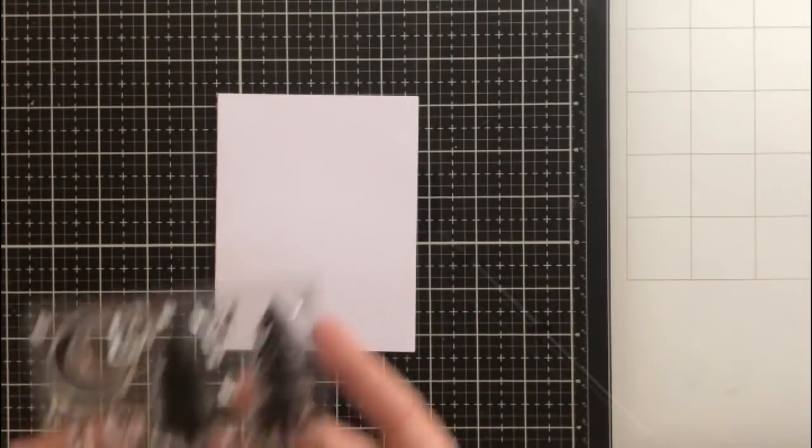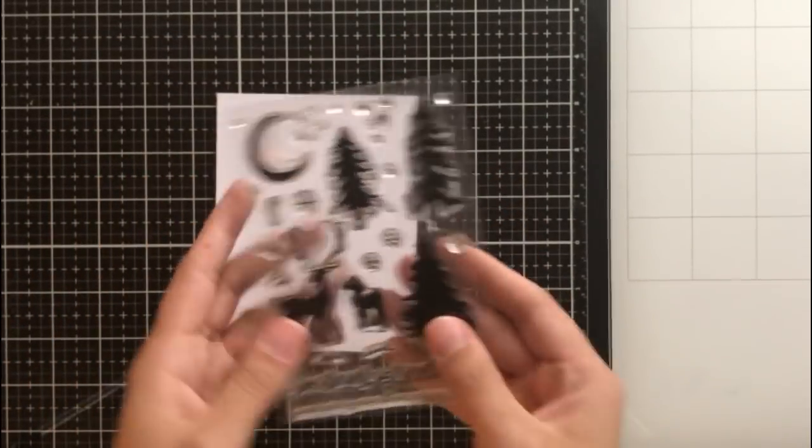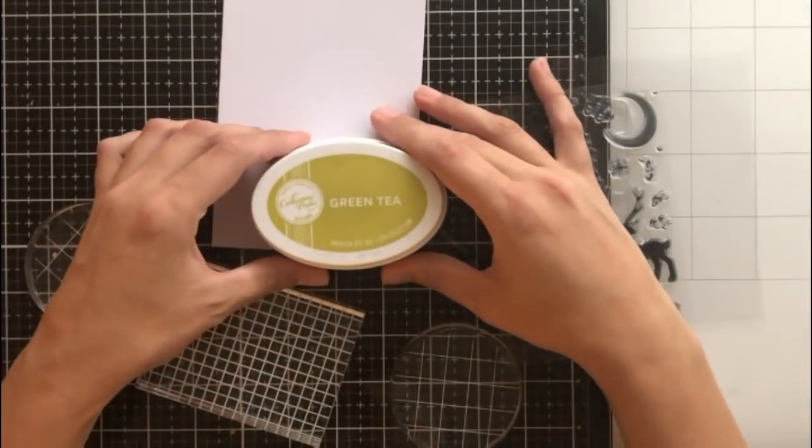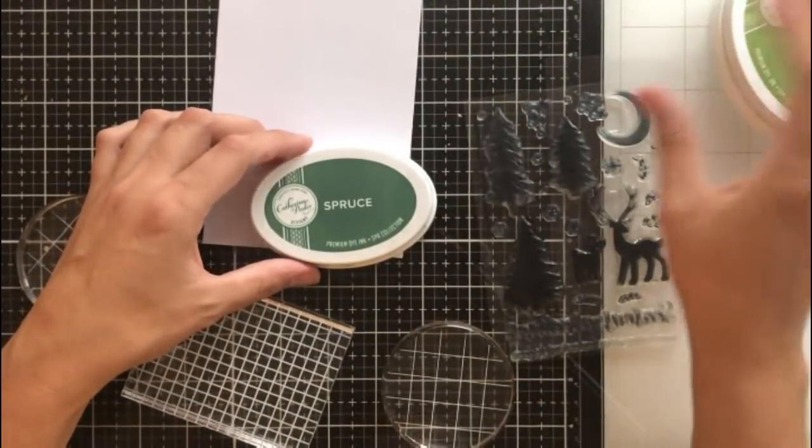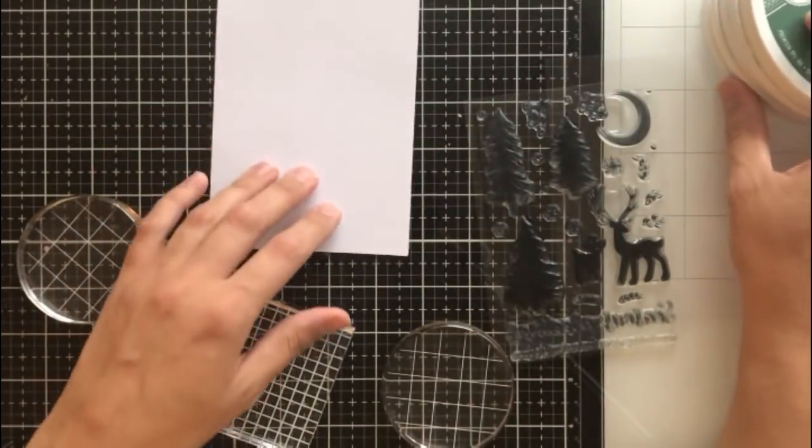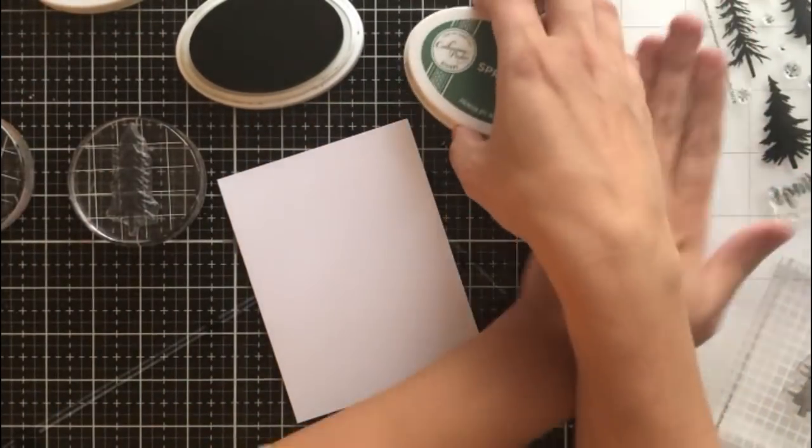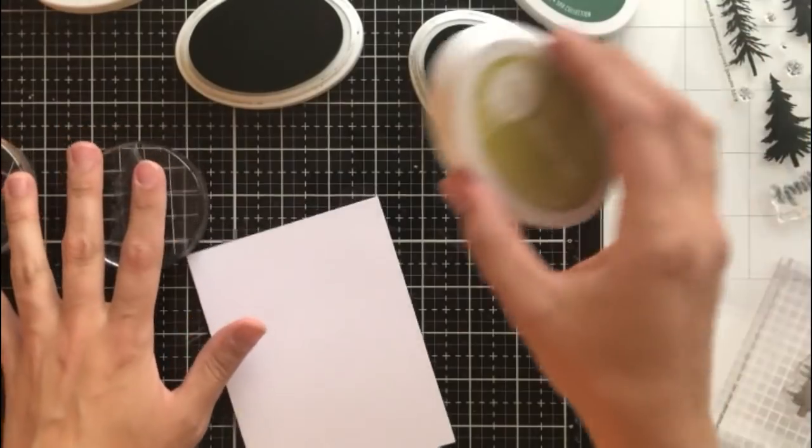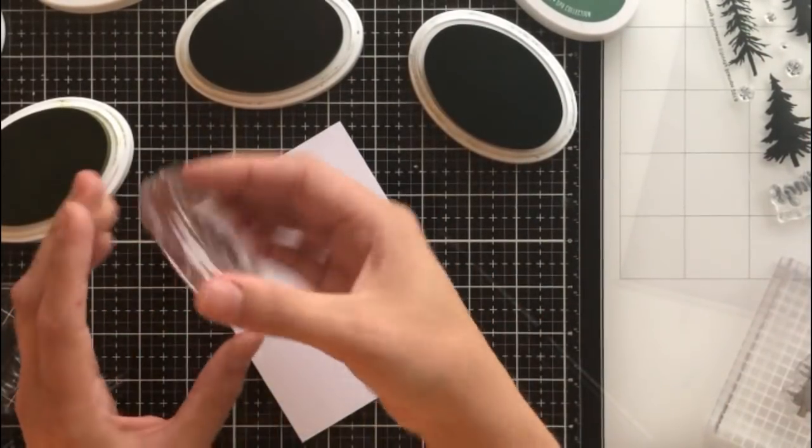For my second card, I'm going to bring in the silhouette stamp set as well. I'm going to use these pine trees to line the bottom of my card front. I'll stamp them in green tea, eucalyptus, and spruce inks by Catherine Pooler. To get it all set up, just to be sure that I know where the colors are because the pads can look very similar, I'm just going to put the tops of the ink pads right near the ink pads themselves. That way I don't get mixed up with the colors.